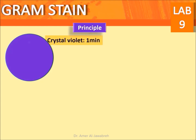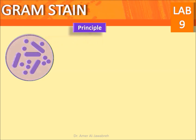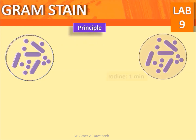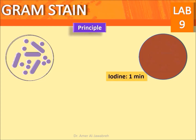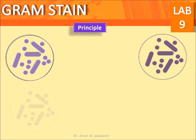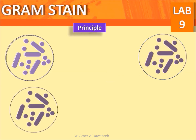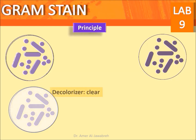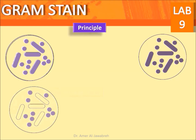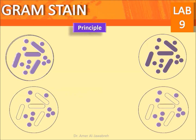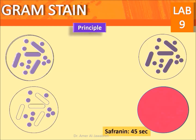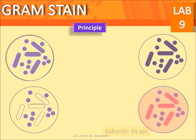When crystal violet is applied, all bacteria become violet. Iodine is then added to stabilize the color of crystal violet. The decolorizer washes out crystal violet in the case of bacteria with a lipid bilayer cell wall, but it remains purple in the case of bacteria with a peptidoglycan cell wall. By adding safranine, lipid bilayer cell wall bacteria become pink, while peptidoglycan cell wall bacteria remain purple.